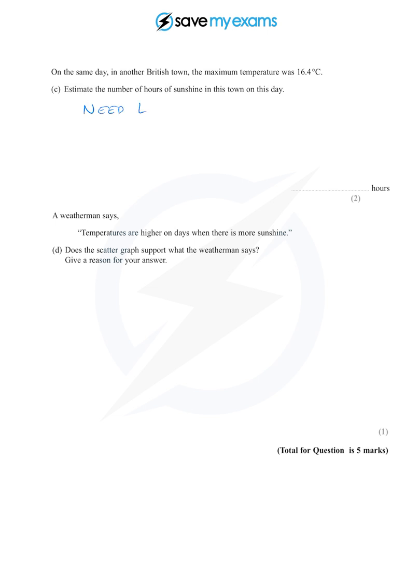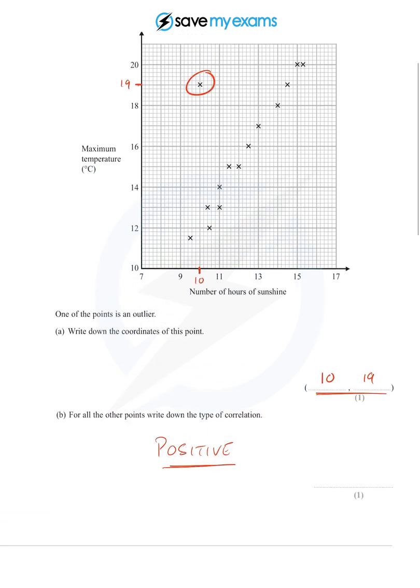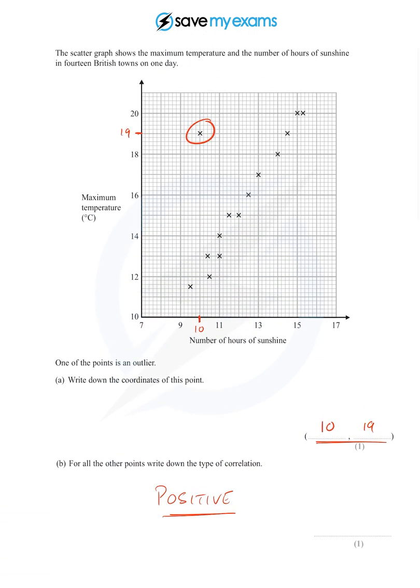We're going to need a line of best fit to be able to do this. And lines of best fit are fun. You can use your ruler. All you need to do is make sure there are about as many points above the line as there are below the line, and make it follow the data. So there's a nice straight line through the data.